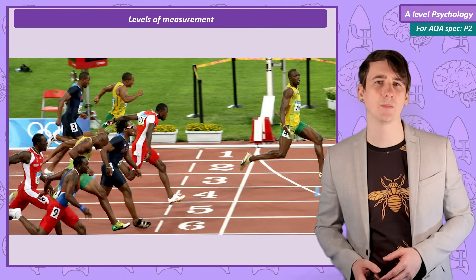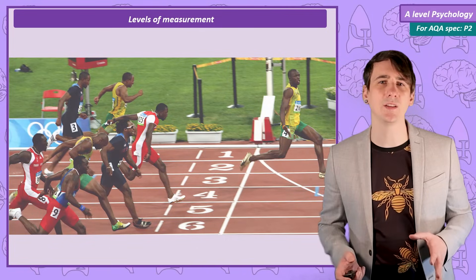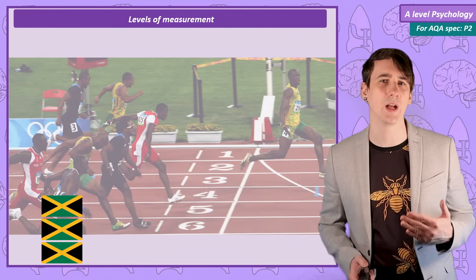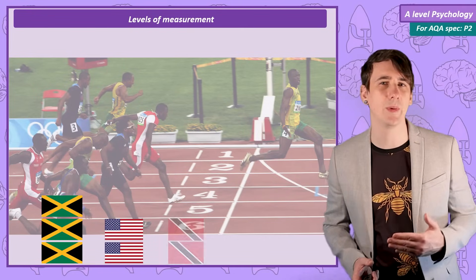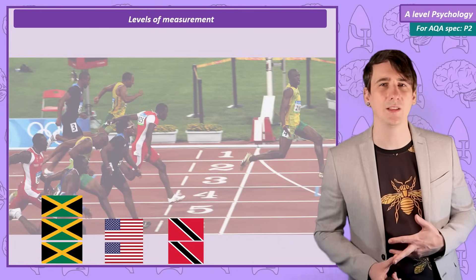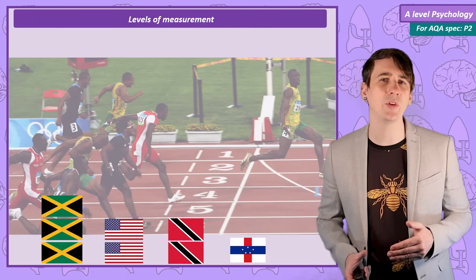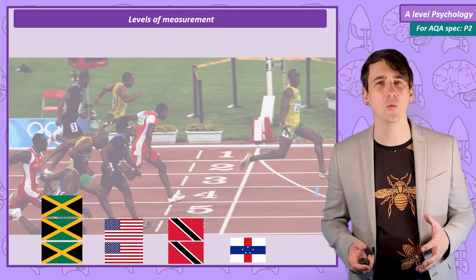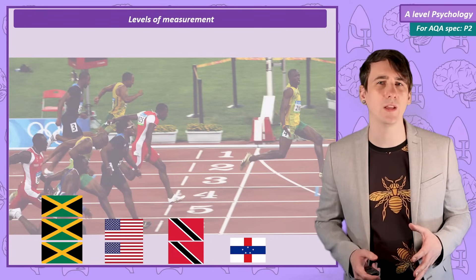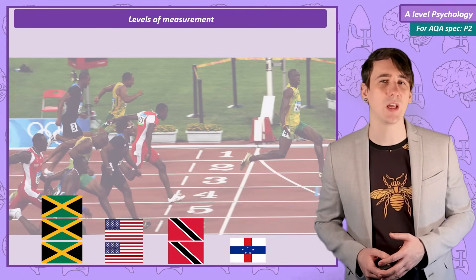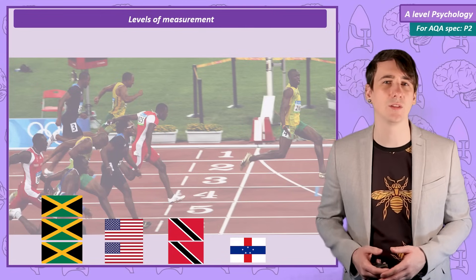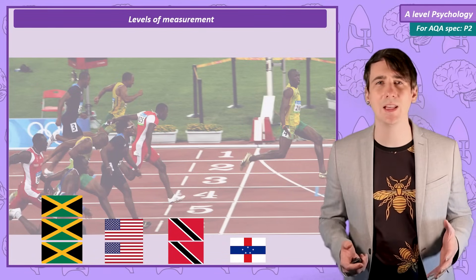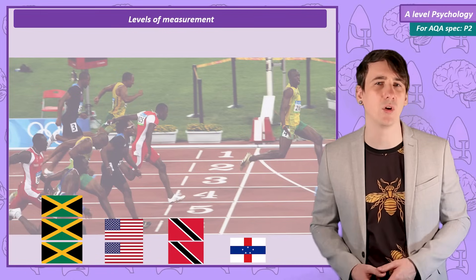Let's start with nominal data. Well we can use nominal data to state the competitors country of origin. We have three from Jamaica, we have two from United States, we have two from Trinidad and Tobago and we have one from Netherlands Antilles. So while nominal data can tell us the number of competitors from each country, this doesn't tell us anything about who won or what order they finish the race or the times. We can just say there are more from one country than others. We could categorise into winners and losers but again that's very limited in communicating the story of the race.